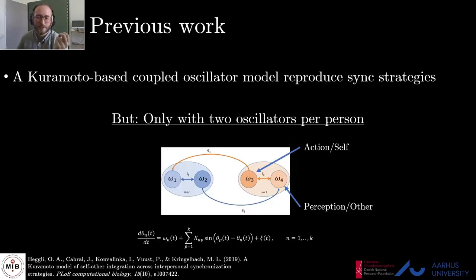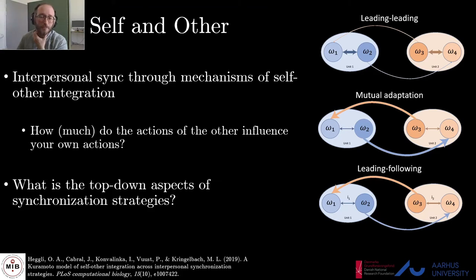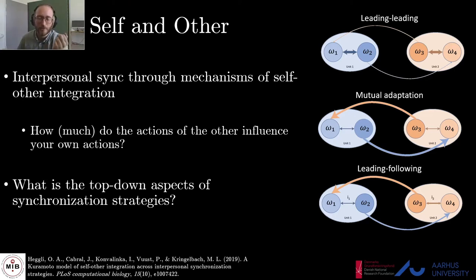To model these strategies, we previously found that a Kuramoto-based coupled oscillator model is able to reproduce synchronization strategies, but only when you model each person as two linked oscillators. We interpreted these oscillators as proxies for action and perception, wherein action is linked to the self — what you yourself are doing — and perception is linked to what the other person is doing. Running a parameter search on this model, we found that the three synchronization strategies depend on the within-unit and between-unit coupling weights, with mutual adaptation requiring a much larger between-unit coupling than within-unit coupling. This model serves as a good starting point for representing the bottom-up, or mechanical, processes underlying synchronization strategies.